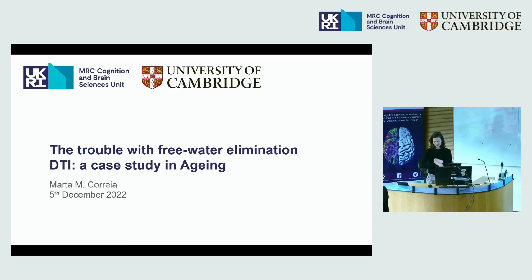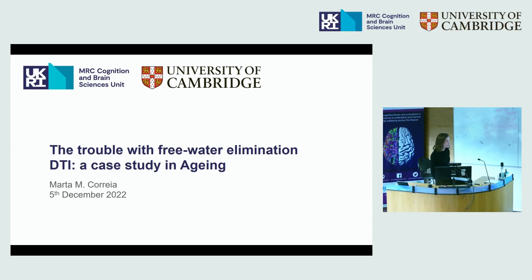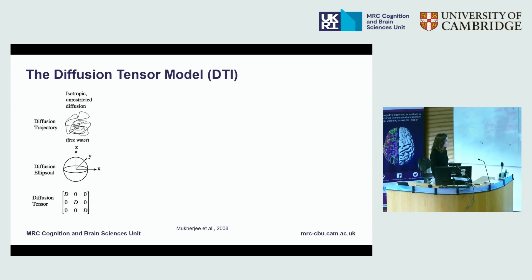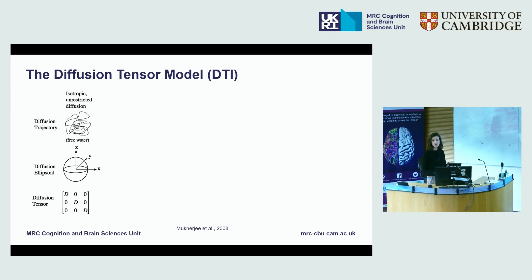I'm going to spend the next 15 minutes or so telling you about a method which is not novel anymore for free water elimination in DTI, and specifically I'm going to be telling you about what is the problem with it. For those of you who haven't worked with DTI before, the diffusion tensor model — the I stands for imaging — is a very simple model to try and work out where water molecules are going in the brain as they diffuse as part of the natural diffusion process.